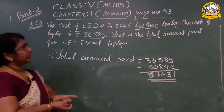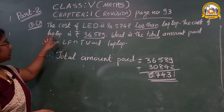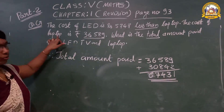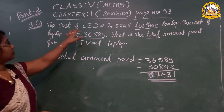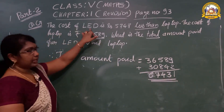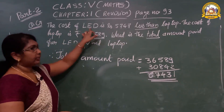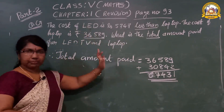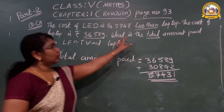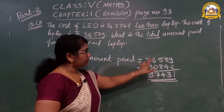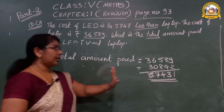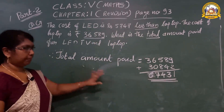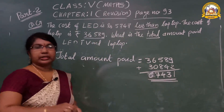One small recap: first step is the cost of the laptop. Second step is the cost of the LED TV — you subtracted those two. Total amount means both amounts you paid. This is the total amount they paid.